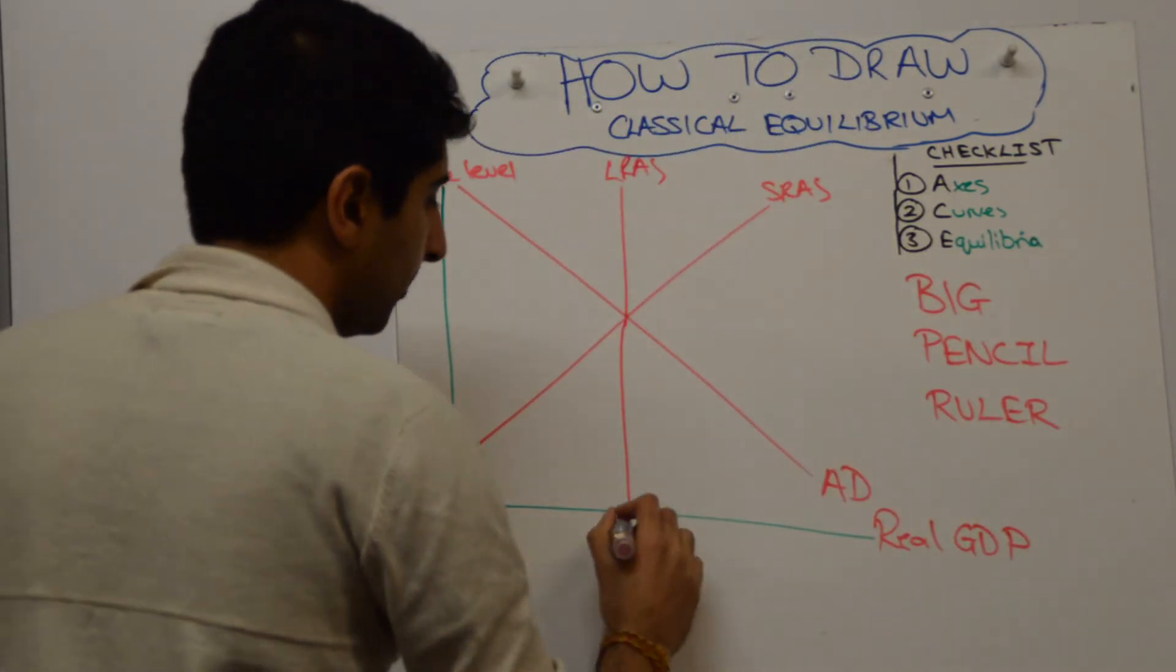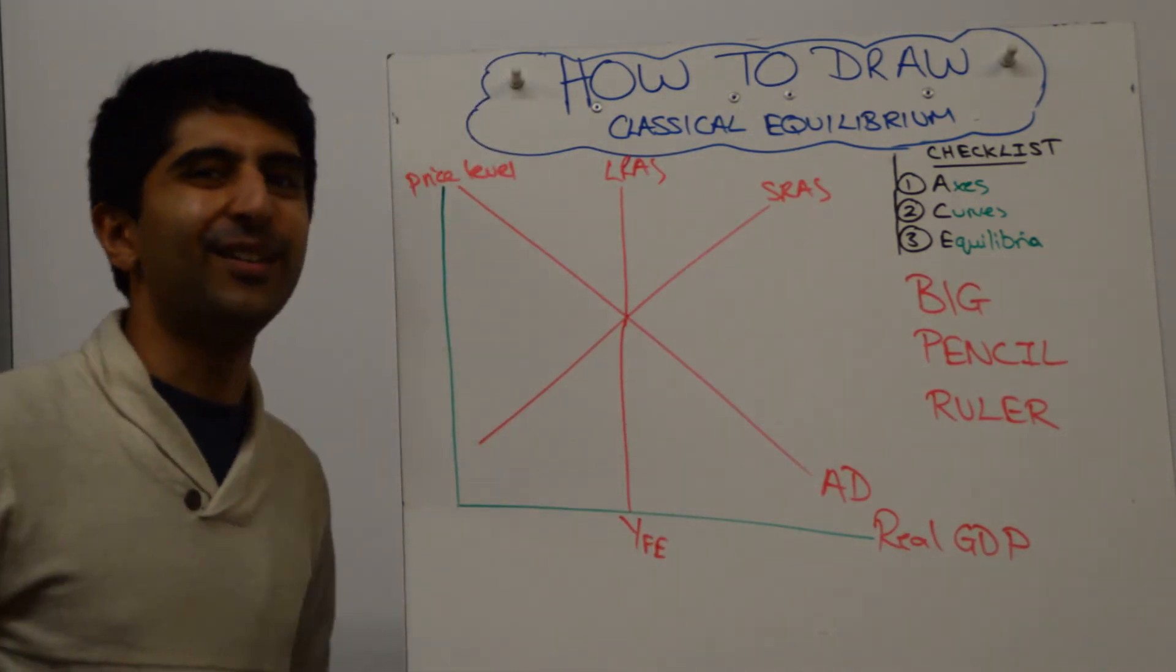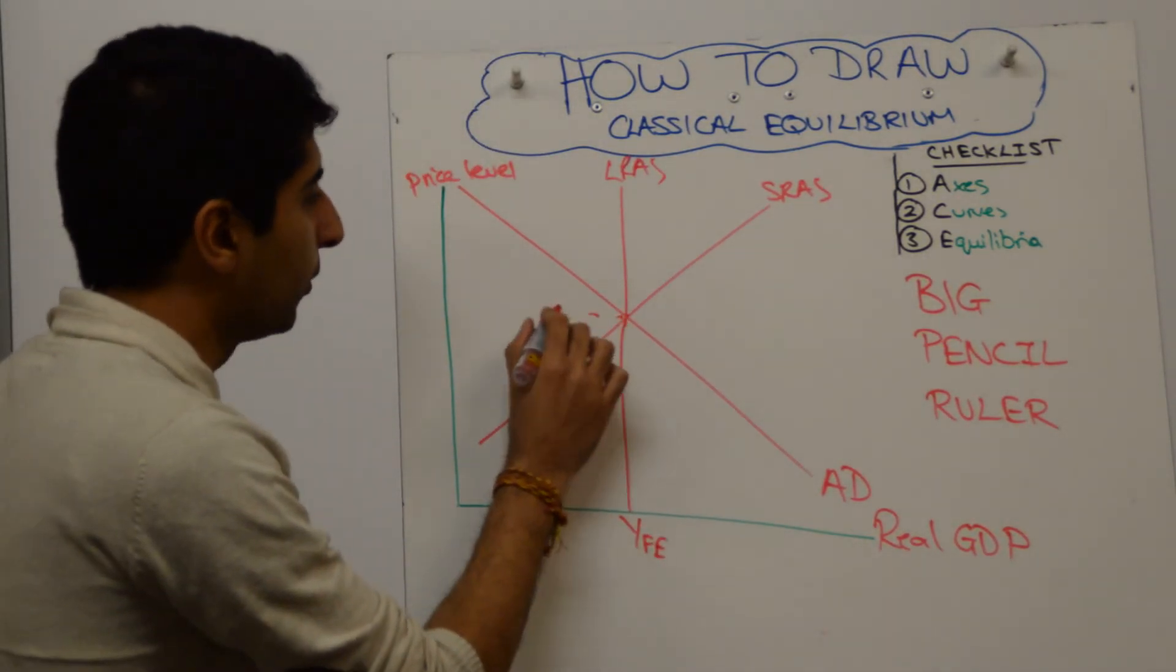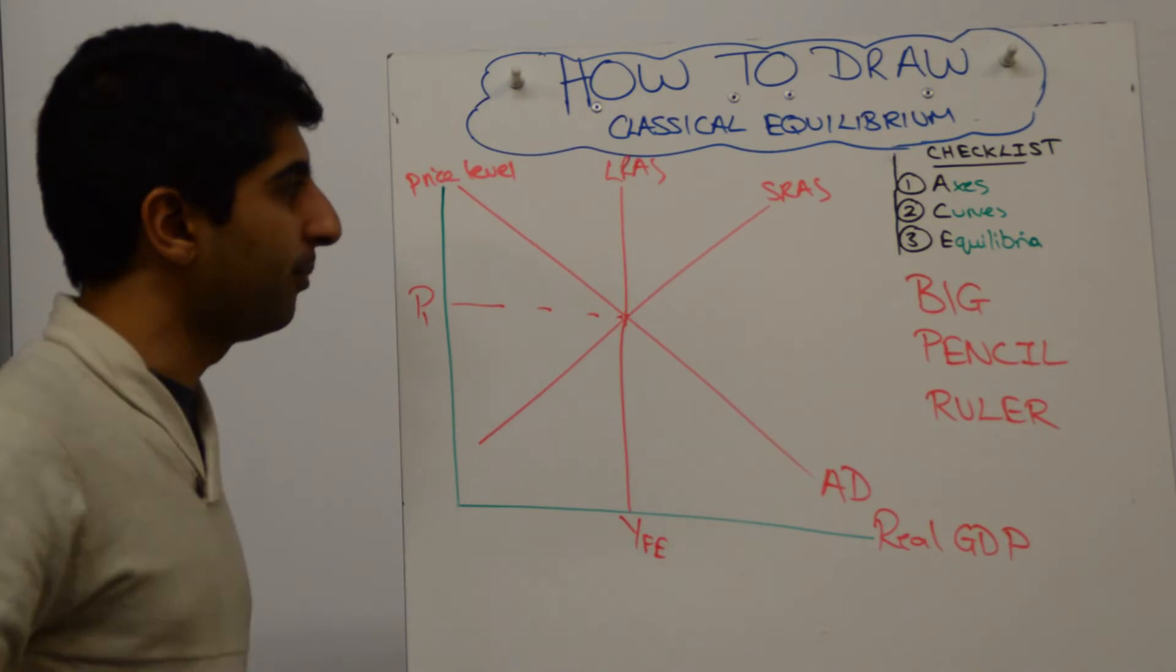And then that equilibrium you just need to label YFE. So this one's much easier to do with a ruler. You also need to label the price level of P1 there.